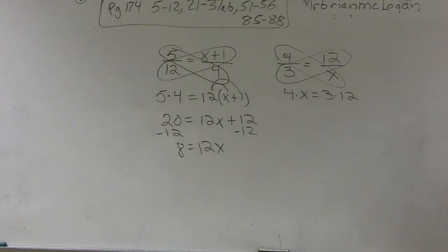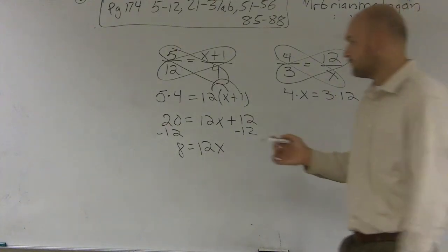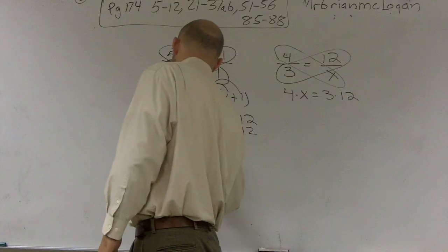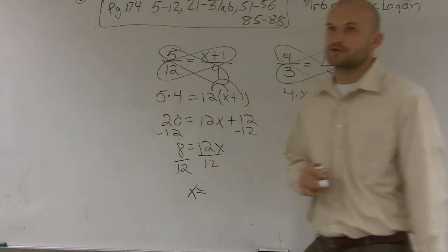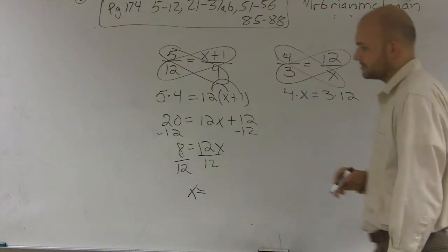And then now I have to get rid of my 12 by dividing. And therefore, I get x is equal, and I can reduce this fraction, is going to be 2 thirds.